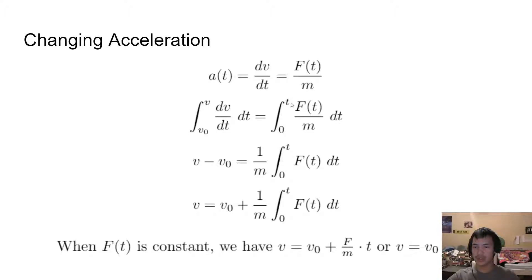On the right side of our equation, we see our integral from 0 to t of F of t over M dt. When going onwards, there's not much we can do here because we don't know what F of t is, but that's fine for now. We just move M out and we end up with 1 over M times the integral of force from 0 to t dt. Then we just add V0 to both sides.